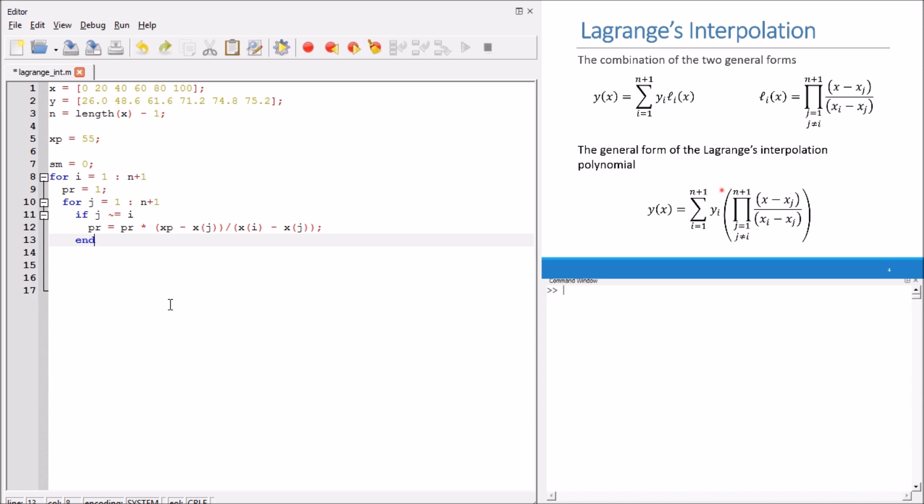Now we close the if condition, and we close also the j loop, and we compute here the summation. Now the product is computed within the j loop. Now we compute the summation within the i loop, which is equal to summation equals yi multiplied by the product here. Now we end the loop and we get the value of summation, which is the corresponding of y to the required value of x.